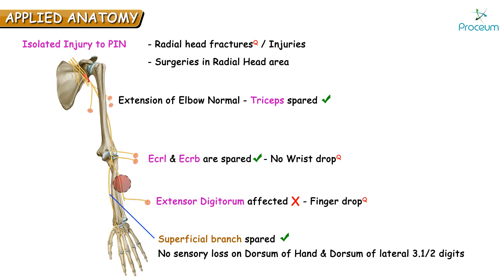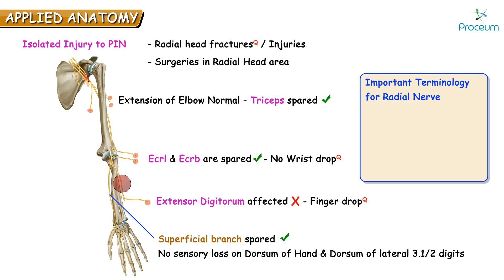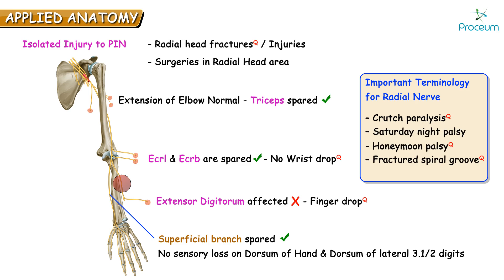Remember these important terms in relation to radial nerve injury: crutch paralysis, Saturday night palsy, fracture at the spiral groove, and wrist drop — all occurring due to radial nerve injury.